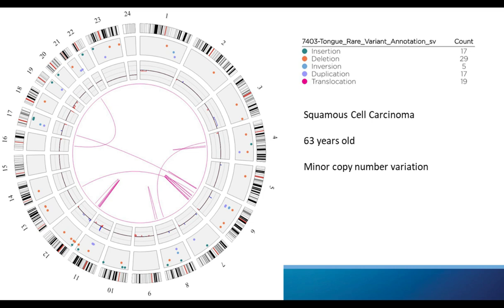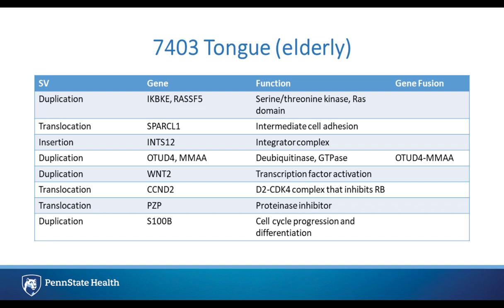Here is another elderly tongue cancer — this patient was 63, again squamous cell carcinoma. A pretty similar story: mostly insertions and deletions, although this one has a bit more duplications and translocations. It has moderate copy number variation — for example, in chromosome 3 there's a region with increased copy number, and in chromosome 9 some loss. Looking at the genes, there's a duplication involving the RASSF5 gene involved in RAS domain function, a duplication in the WNT2 gene which is a transcription factor activator, and a translocation involving CCND2 involved in the D2-CDK4 complex that inhibits RB.